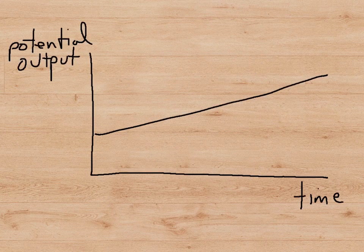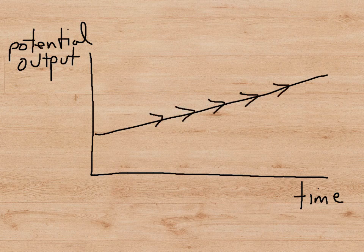This is shown in this graph here where we see on the y-axis potential output and on the x-axis time. So, we can see that over time, the potential output of the economy increases as education gets better, more workers come into the country from outside perhaps through immigration, and technology improves and the stock of machines increases. So, this increases potential output.